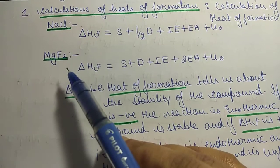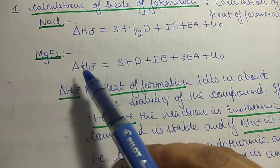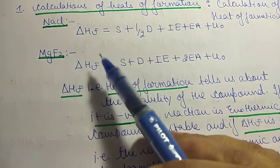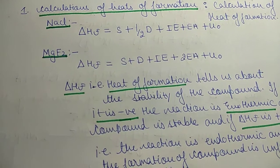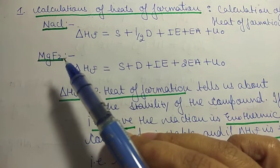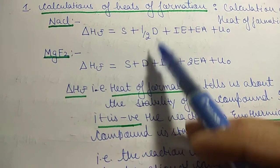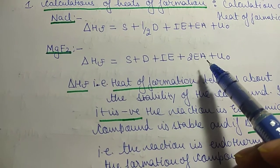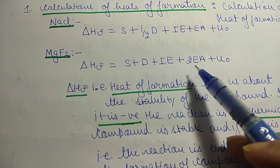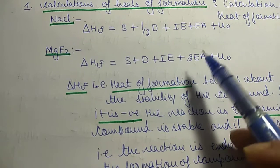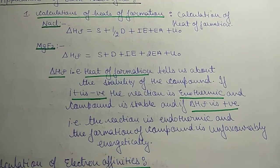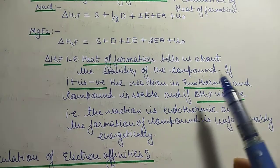For magnesium fluoride, the heat of formation ΔHf equals S plus D, where D is the full dissociation energy because we are taking two moles of fluorine. So we do not take half D. Then we add ionization energy plus twice the electron affinity, since two moles of fluorine are present, plus lattice energy U-naught.